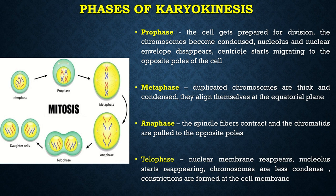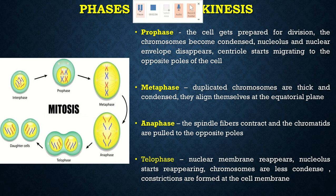Prophase is followed by metaphase. In metaphase, the duplicated chromosomes arrange themselves at the equatorial plane. The major difference between the chromosomes of prophase and metaphase is that the metaphase chromosomes are highly condensed.